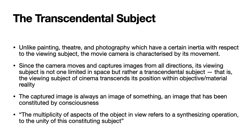Who is the viewing subject of cinema? The viewing subject is not a person, but a particular position or location that you have to occupy in order to view this particular art form. Unlike painting, theatre, and photography, which have a certain inertia with respect to the viewing subject, the movie camera is characterized by its movement. In the case of the camera obscura or even Renaissance art, there is a particular position that the viewing subject should occupy to get the best view of that image. This is true in painting, still photography, and even in theatre.